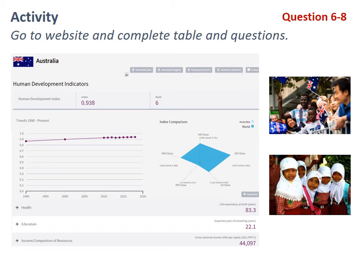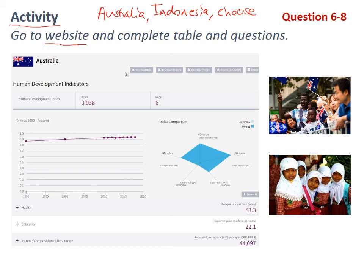Now I want you to jump into this activity. I've uploaded a table in the Google Doc and there's a website link. You need to go to that website and complete a table which compares Australia, Indonesia, and a country of your choice — maybe a country where you have family or friends, or just one you're interested in. It can be high income, low income, or middle income — your choice. Just make sure you write that country in the table, complete the table, and answer the questions.